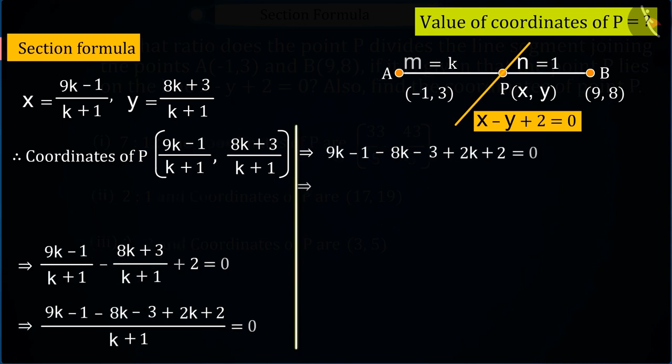we get the value of k as 2/3, from which we can say that line segment AB is divided by point P in 2 ratio 3.